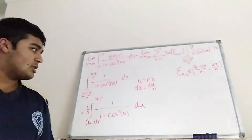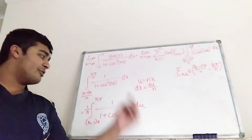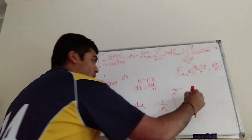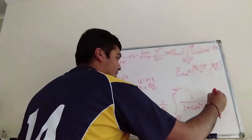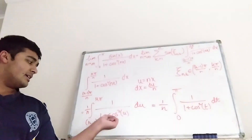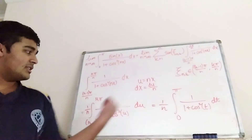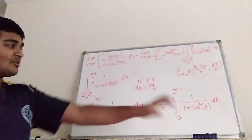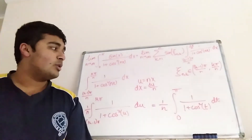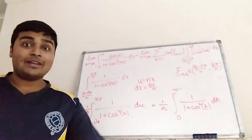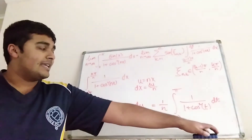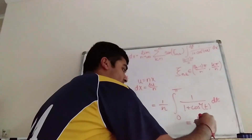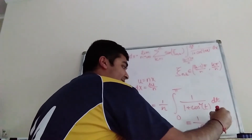Now we do another substitution that makes use of the periodicity of cos², which shifts the limits down by (k−1)π — using t = u − (k−1)π — so this integral equals 1/n times the integral from 0 to π of 1/(1 + cos²(t)) dt. Now I've evaluated this integral in a different video — I'll leave a link in the description — but this equals π/√2. So all in all the inner integral equals (1/n)(π/√2), which I'll write as (1/√2)(π/n).